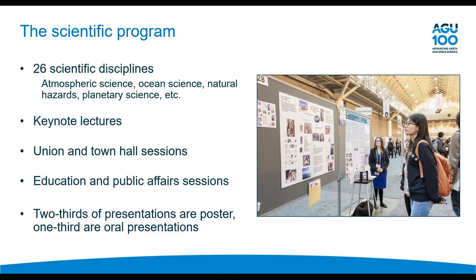The scientific program is organized around 26 scientific disciplines covering all areas of earth and space science — from atmospheric science to ocean science, natural hazards, planetary science, space physics, climate, and more. There are also keynote lectures, union and town hall sessions that cross disciplines, and sessions on science education, public affairs, and public policy. About two-thirds of presentations are posters and about a third are oral presentations.